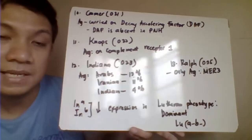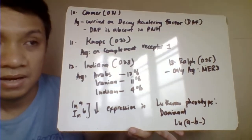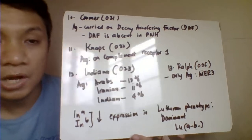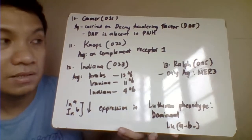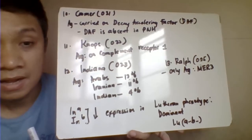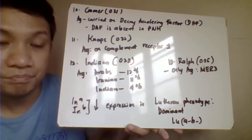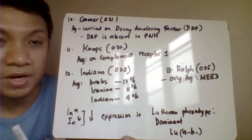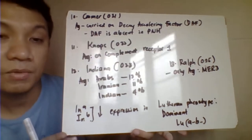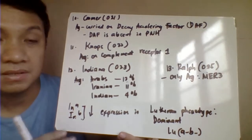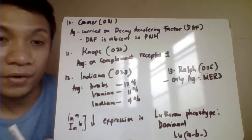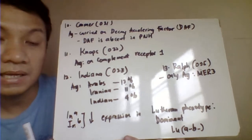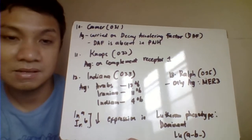And lastly, we have the Raph blood group system 025, and the only antigen related to that is your MER3. So that's all related to our major and other major blood group systems, and we have also the minor blood group systems. For other discussion here, for the antibody, those are your IgG antibodies, they are clinically significant antibodies. Okay, thank you.